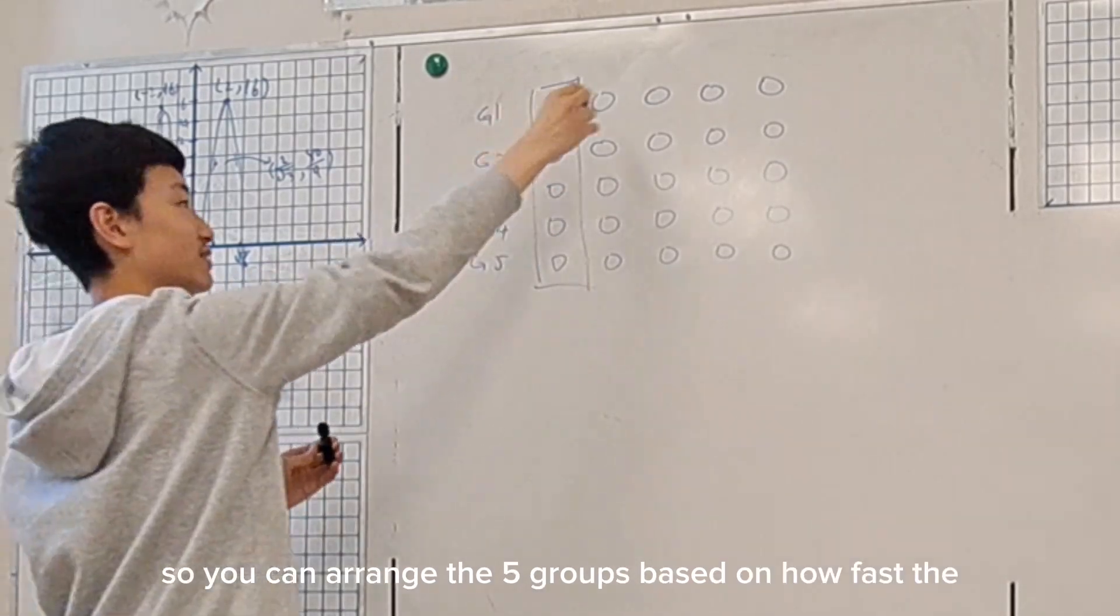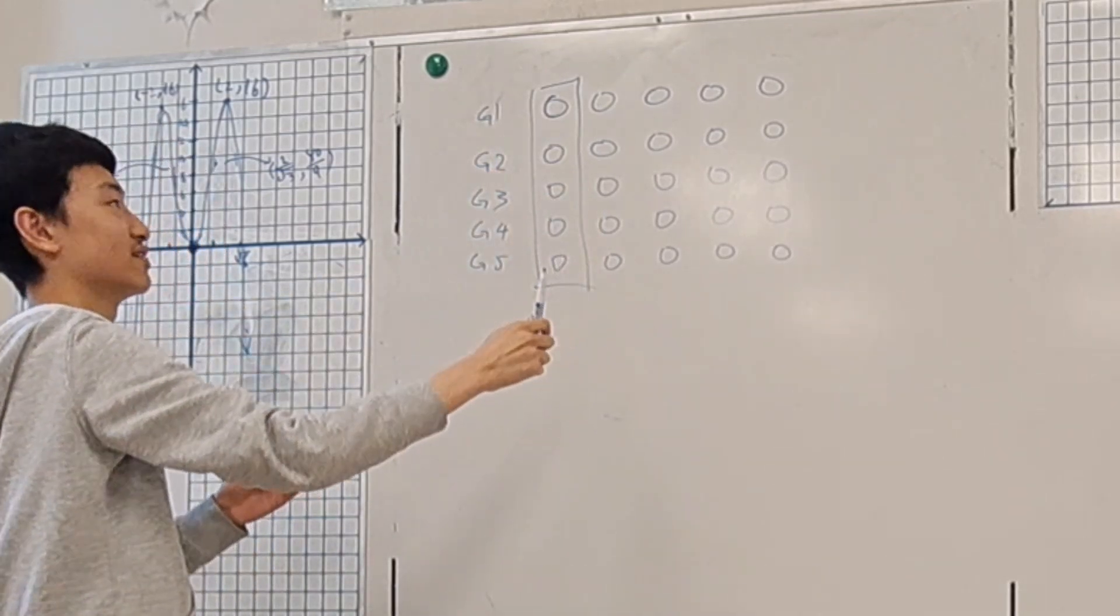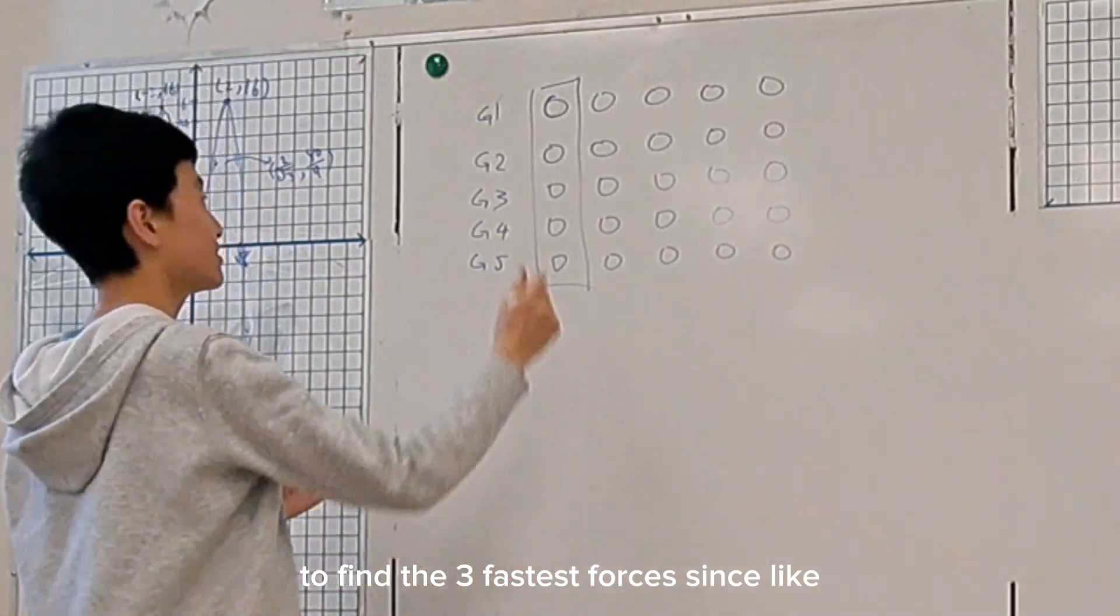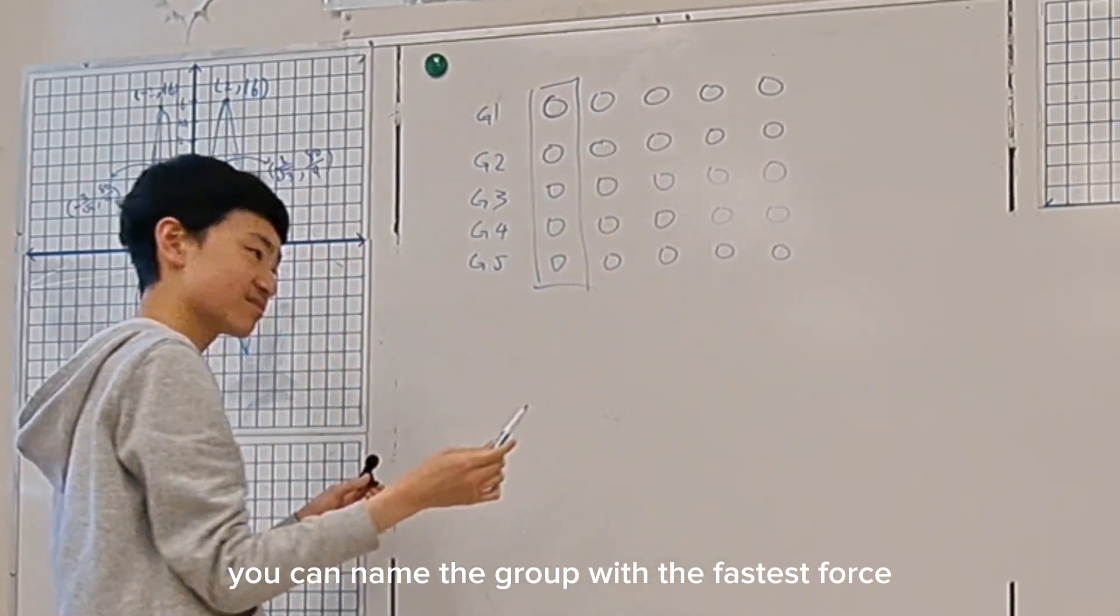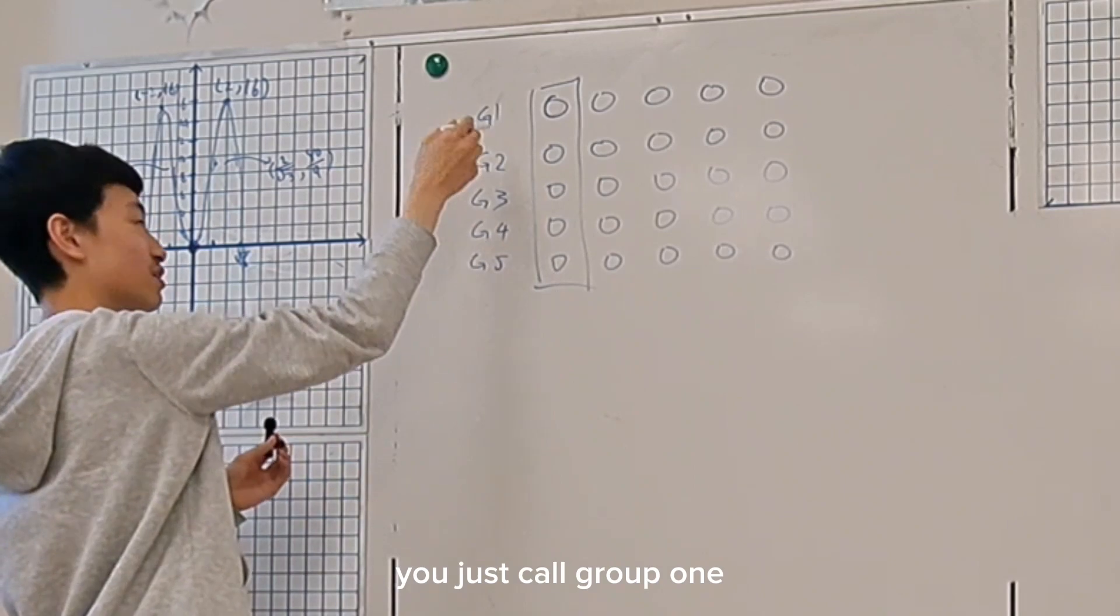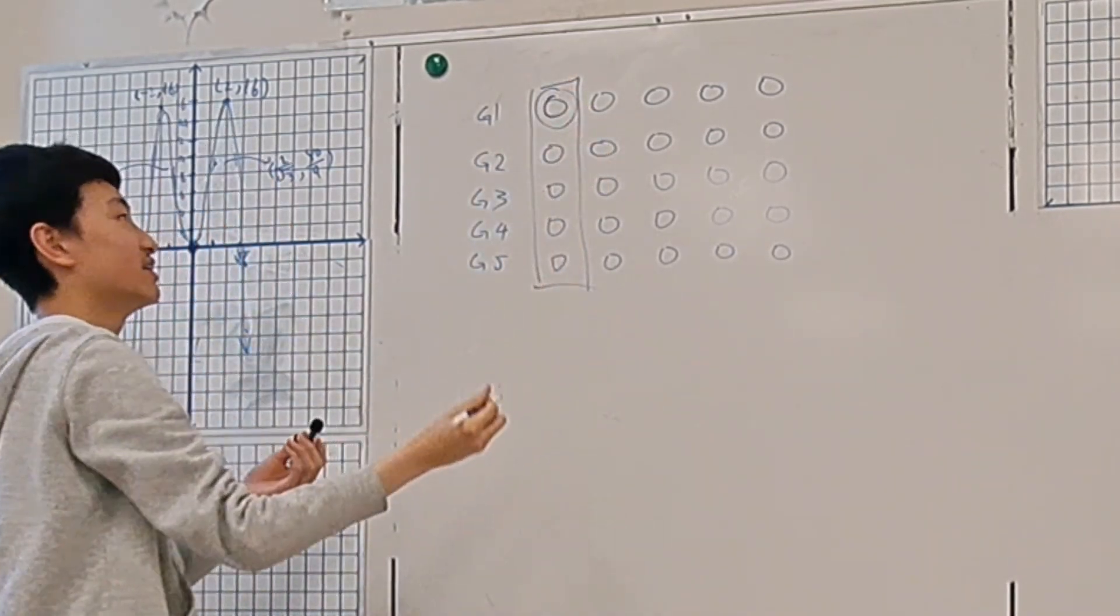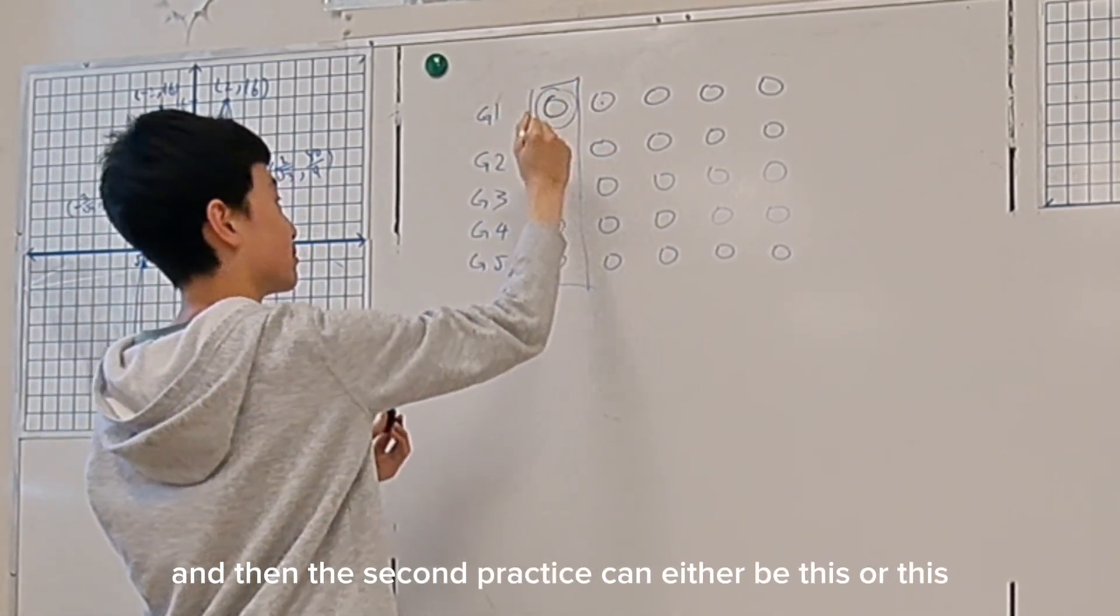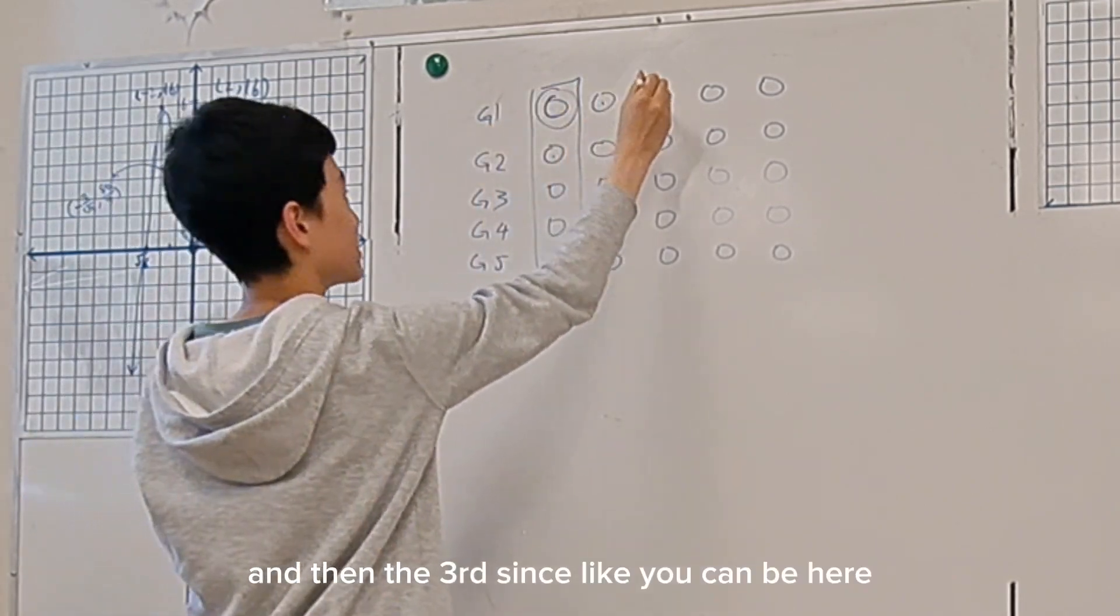And then the question asks to find the three fastest horses. Since you can name the group with the fastest horse—like that's the fastest in all five—you just call it group one. So this has to be the fastest one. And then the second fastest can either be this or this. And then the third, since this is slower than that and this is slower than that, it can be this or it can be this or it can be this.